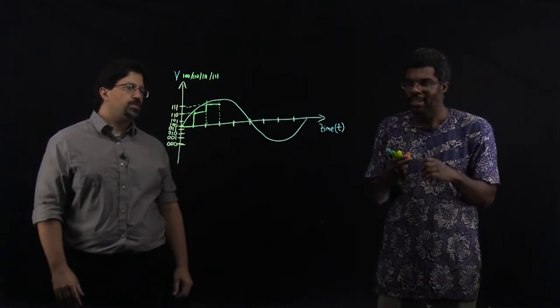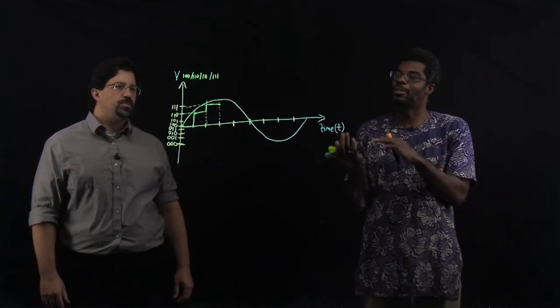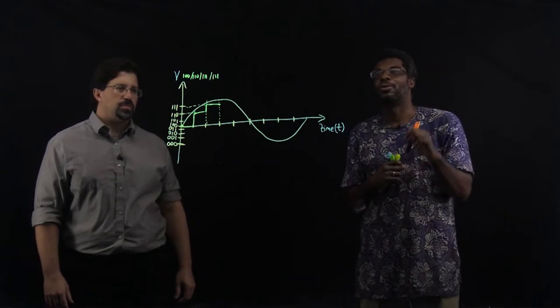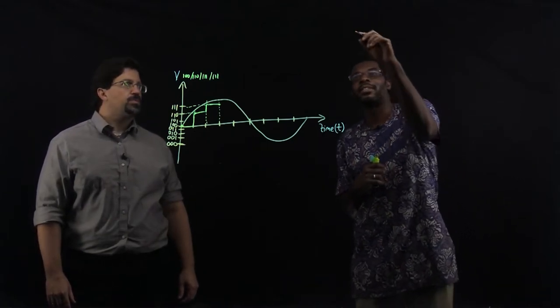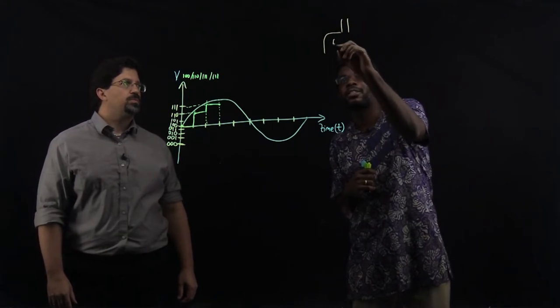So in the computer we sometimes think of the ones and zeros as on or off. And so one way to think about that is a tap that has a faucet and has a handle.